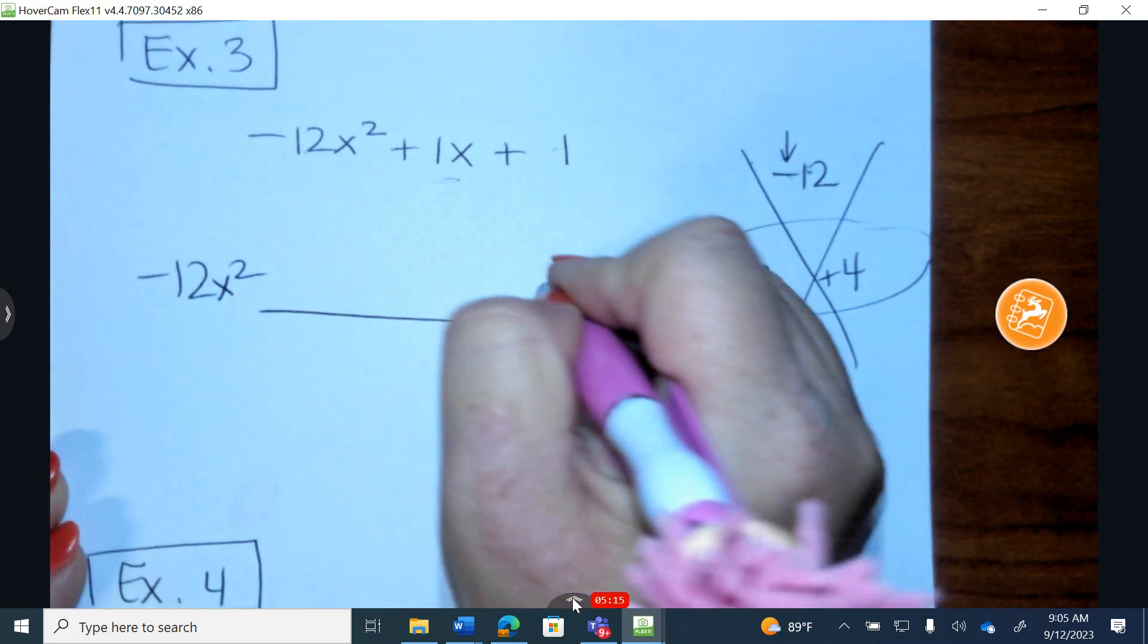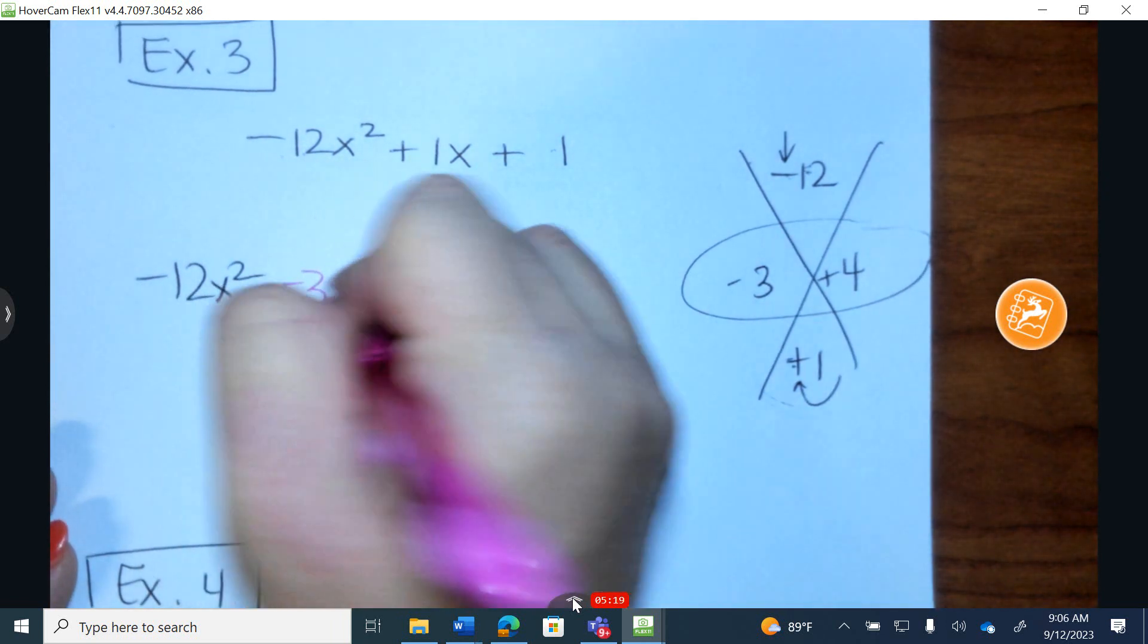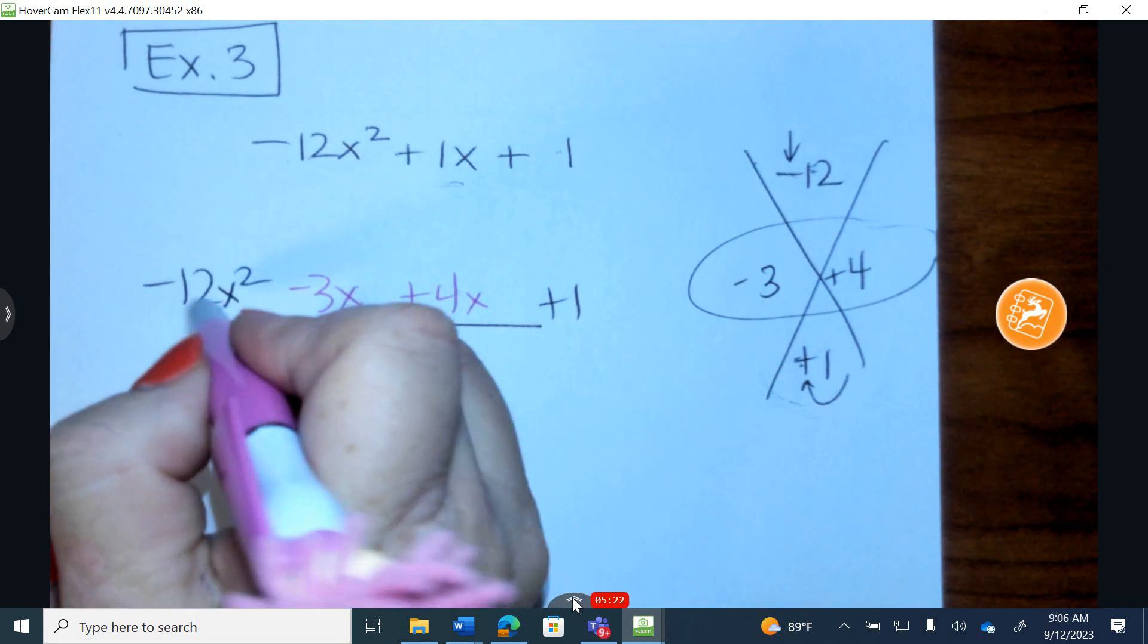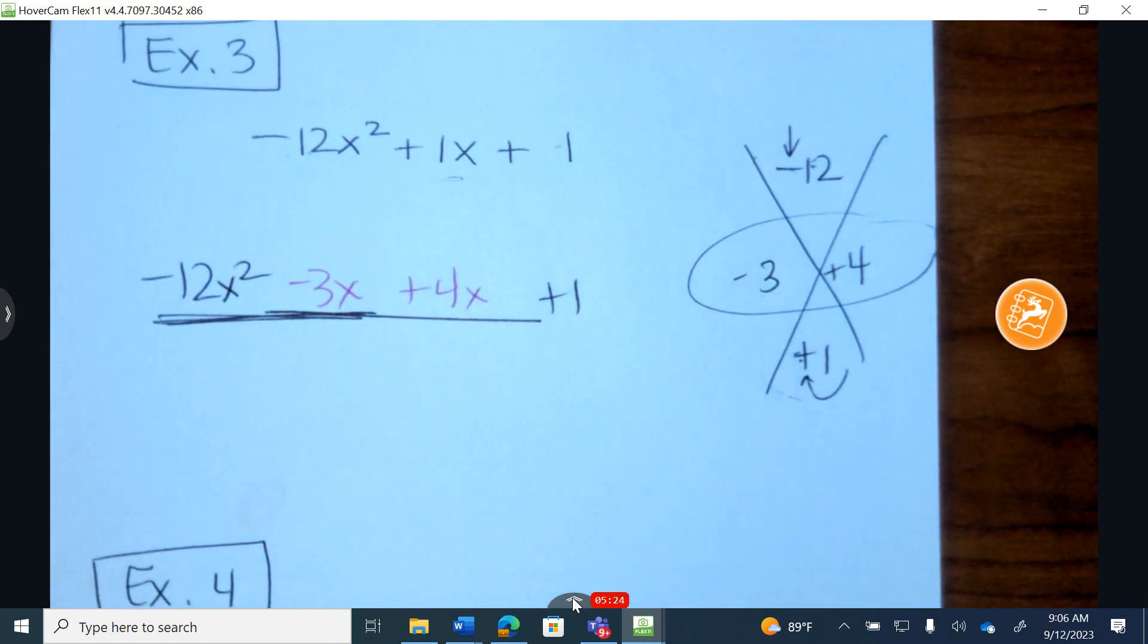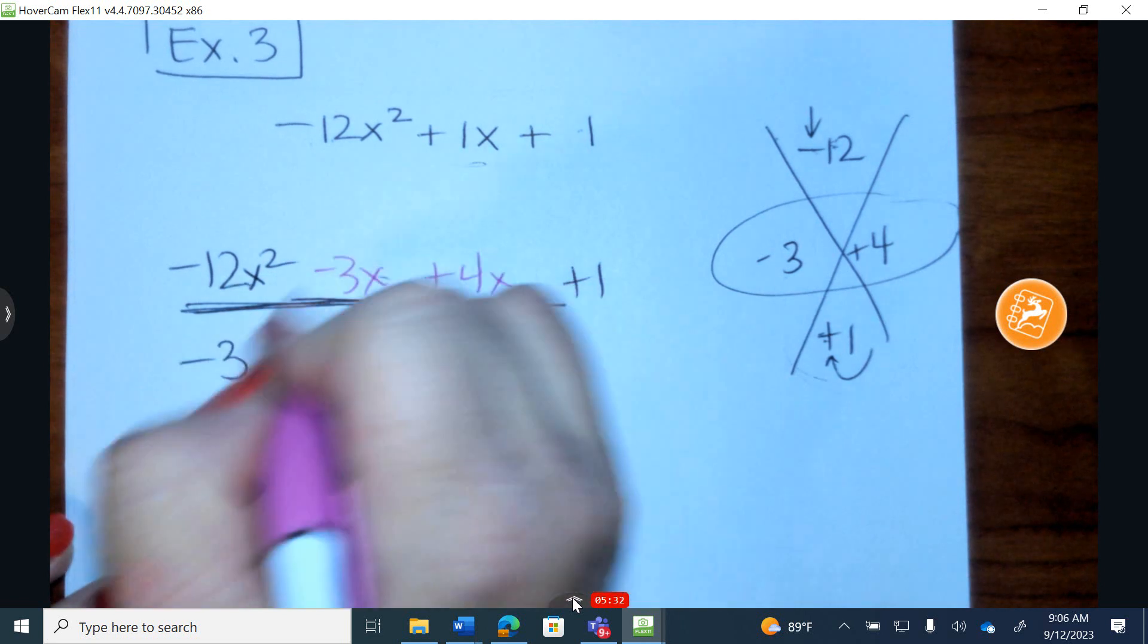Negative 12x squared, big line, positive 1. Negative 3x and positive 4x. What is the most that I can divide out of negative 3 and negative 12? I'm going to divide out negatives whenever possible. So I'm going to factor out a negative 3, and I can take out an x.